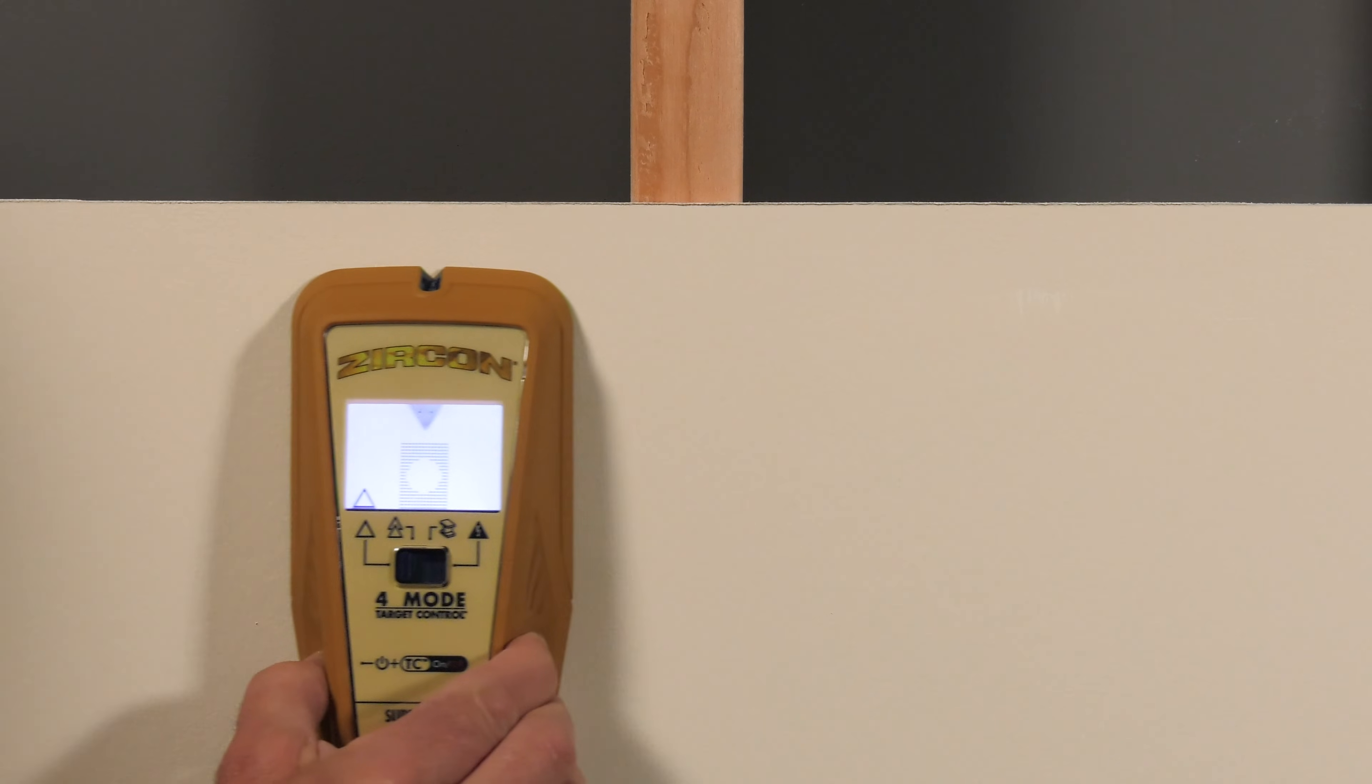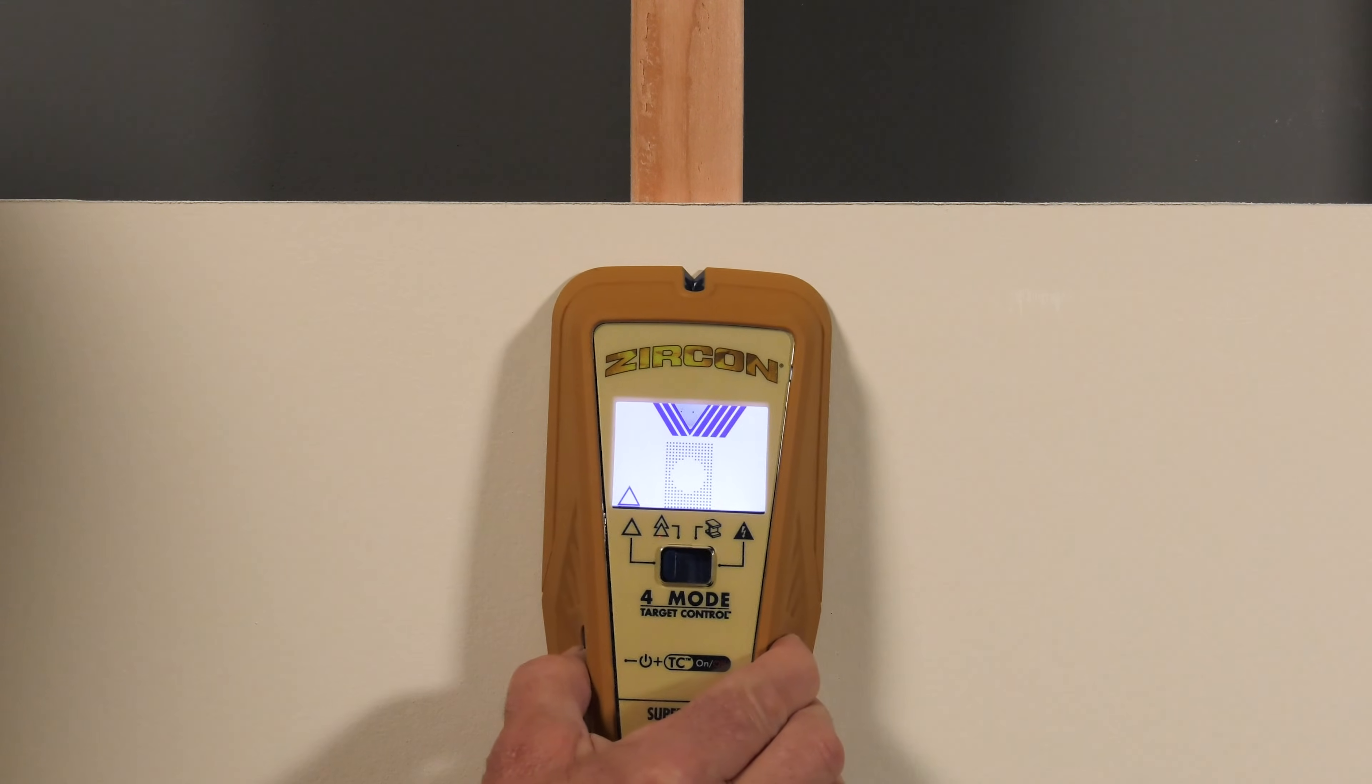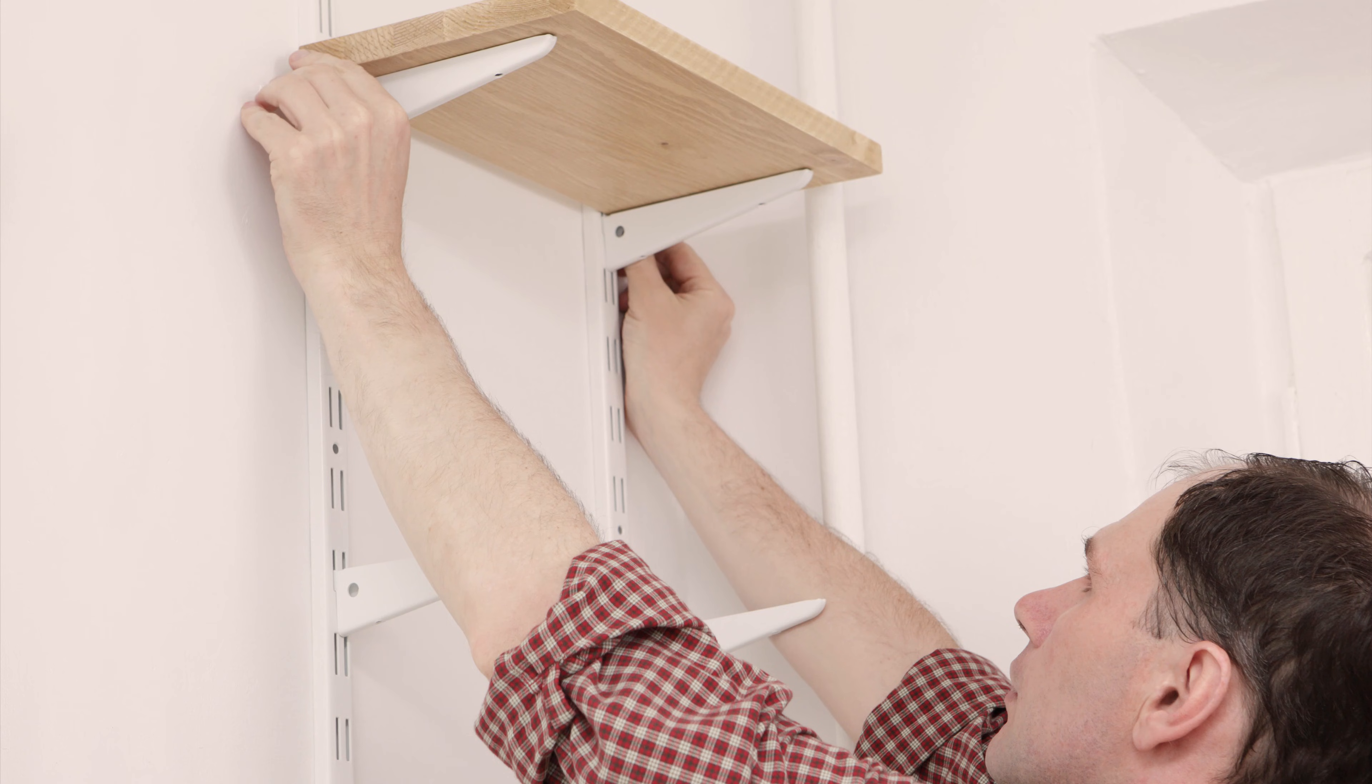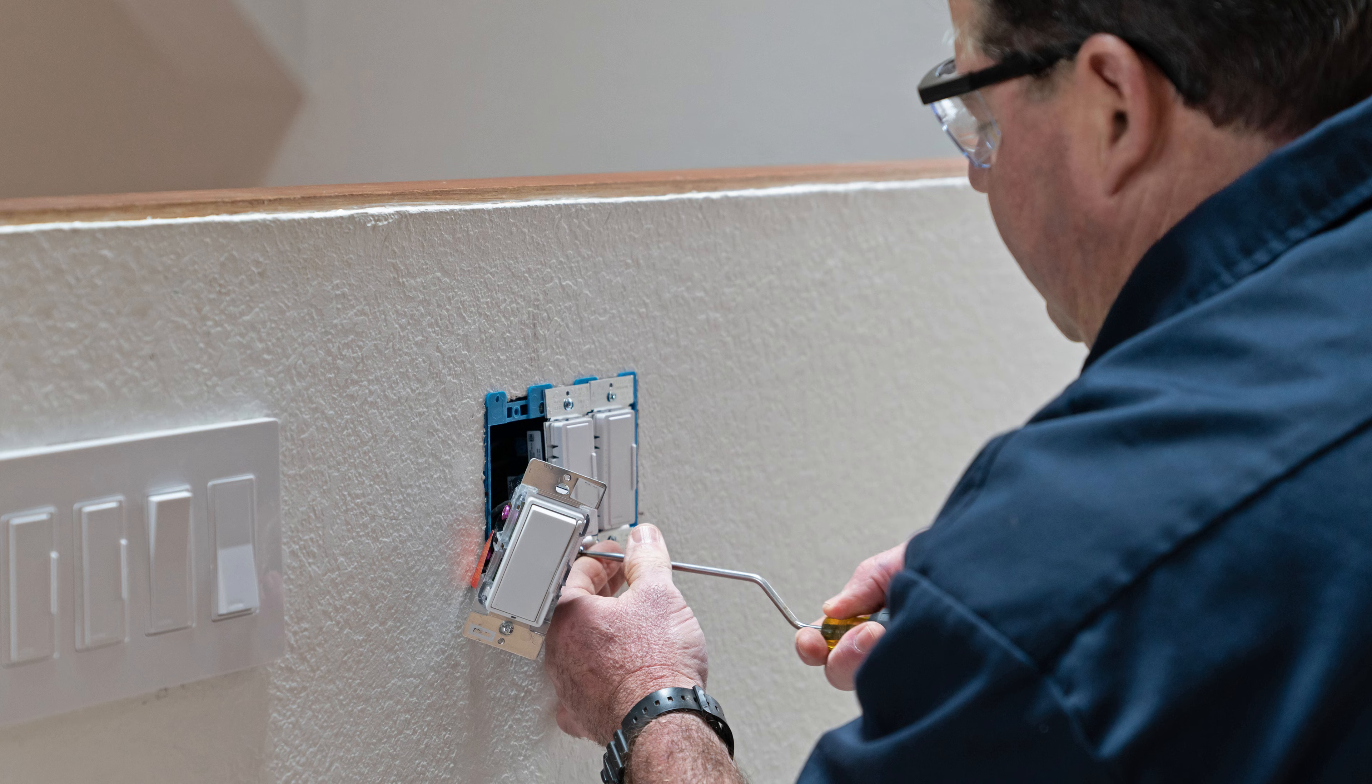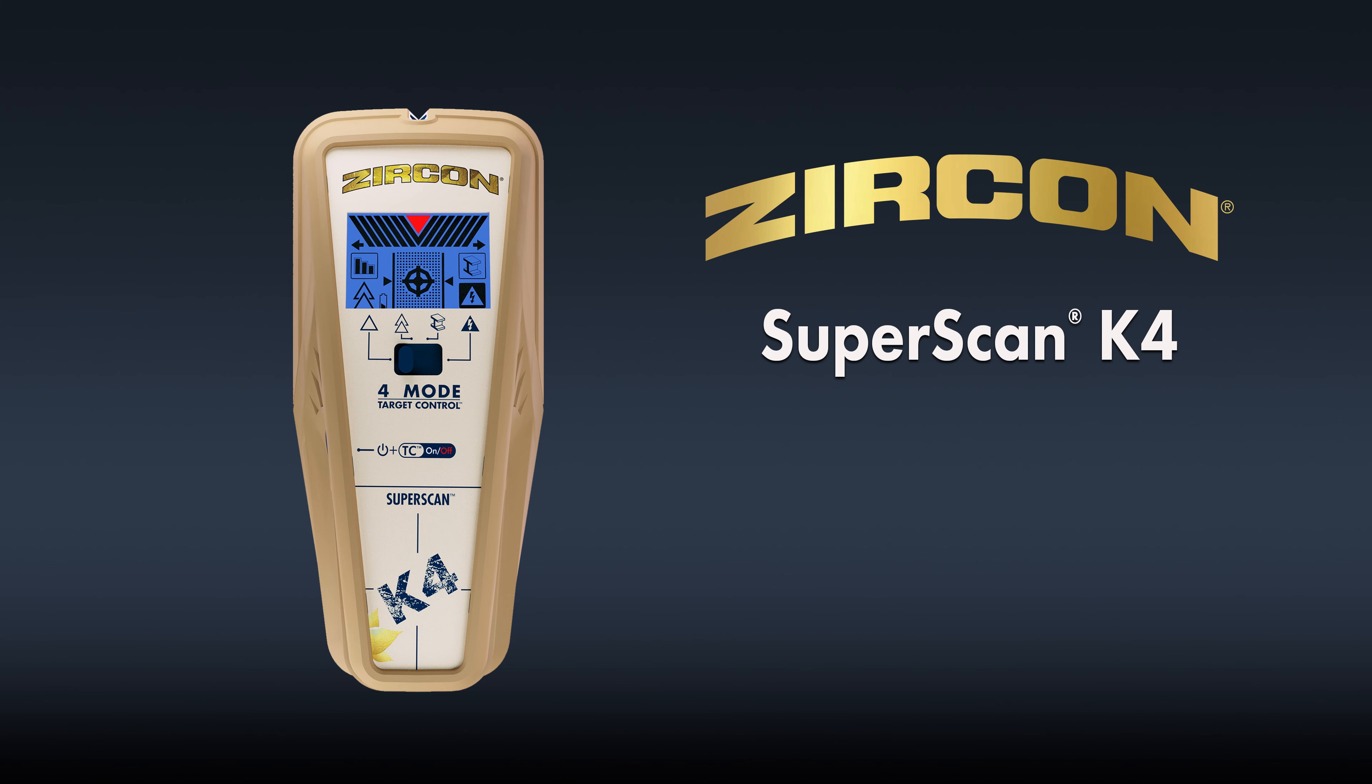Use the SuperScan K4 with TC technology to securely fasten shelves and cabinets, avoid metal through tile, and avoid live AC. Buy your Zircon SuperScan K4 Advanced Wall Scanner today.